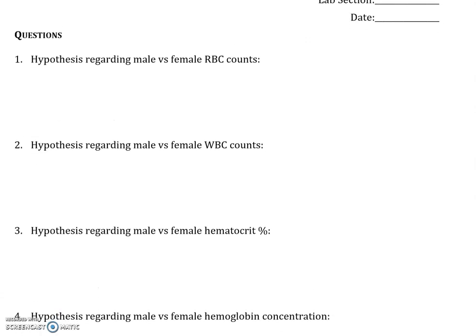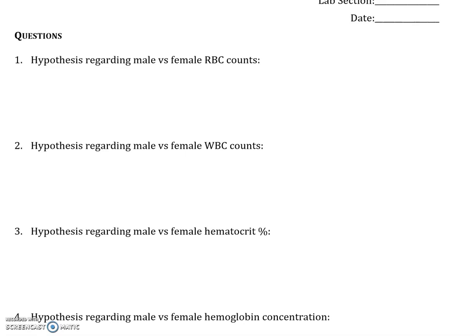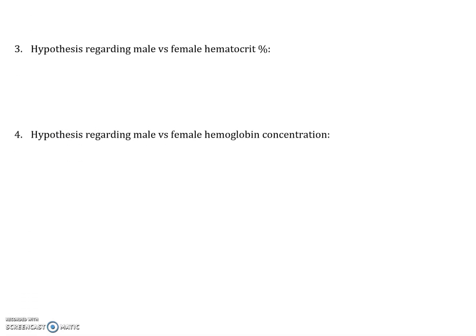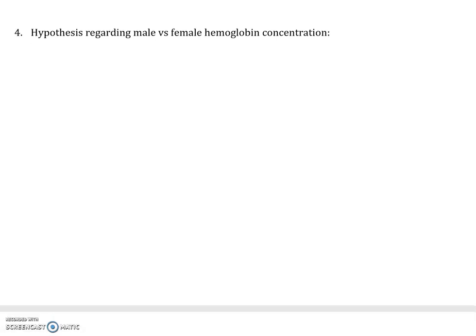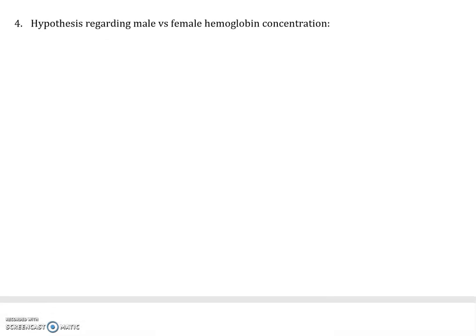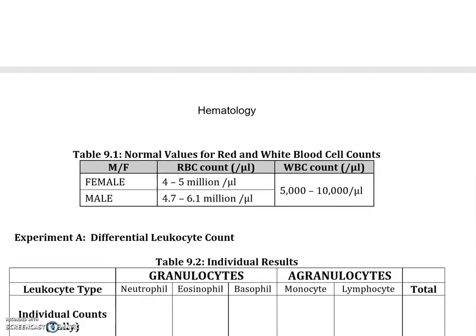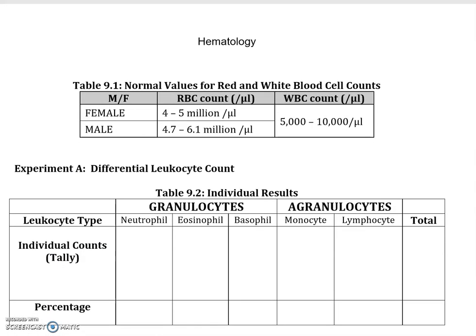For the lab questions: regarding male versus female RBC counts — males do have a higher red blood cell count and also a higher hematocrit on average. For white blood cell counts, since white blood cells work for the immune system, there should be no gender difference. For the hematocrit hypothesis, hematocrit and hemoglobin go together — males are higher on average for both. The reason is that males on average have higher muscle mass, and more muscle requires more oxygen, so more hemoglobin is necessary.